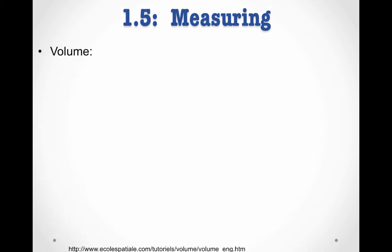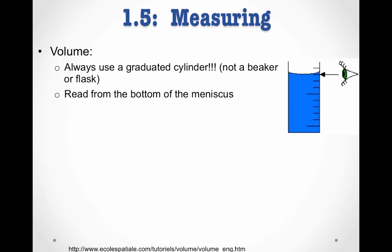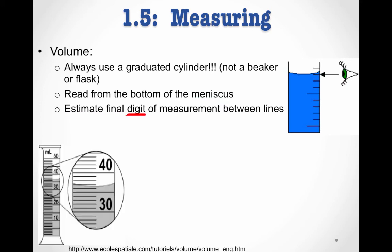When measuring volume, there's a couple things to keep in mind. First, we always want to use a graduated cylinder. Do not use a beaker, do not use a flask, or you will suffer my wrath. We'll talk about this in class and actually look at this class, so don't worry. You want to read from the bottom of the meniscus. So what's the meniscus? Well, if you've ever poured liquid into a narrow tube, you might notice that the liquid starts to crawl up the sides and make this kind of curved shape. That's the meniscus. You want to read from the bottom of the meniscus. That's how you're going to get an accurate measurement. And just like our measurements before, you want to estimate your final digit.